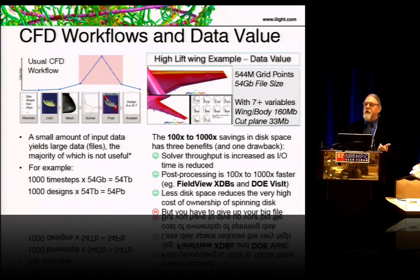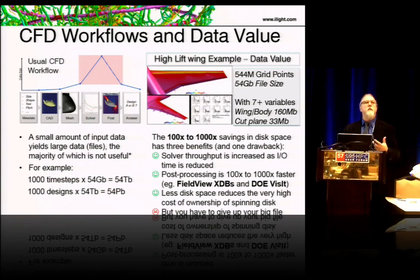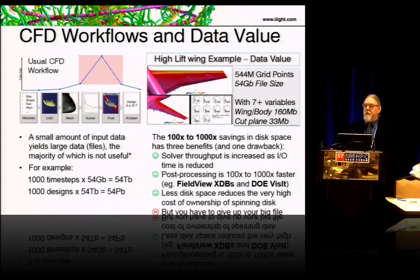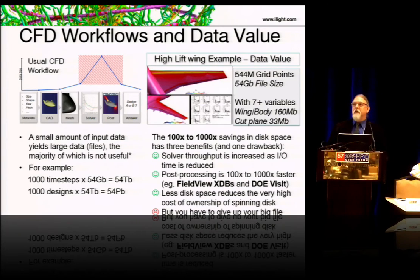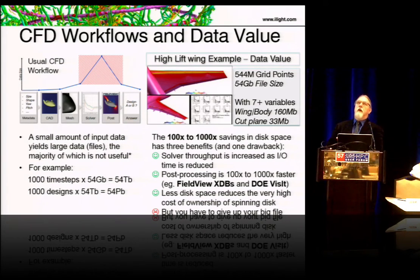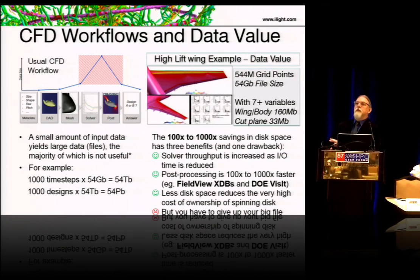Some of the benefits are that solver throughput is increased — we saw charts about stopping the solver while doing disk IO; that goes away. Post-processing is a hundred to a thousand times faster because you don't have to read data in or wait an hour for it to copy. In our commercial product FieldView, we have something called an extract database — the heart of the matter, the stuff you really need. We've been working the last three years with the guys at Livermore; we've commercialized the VisIt code, their open-source production visualization code. You link that into your solver and write extract files directly from solver memory to disk in a much reduced form.